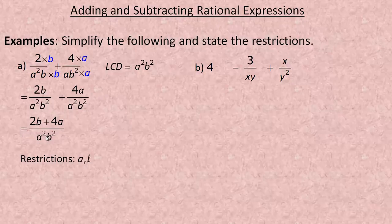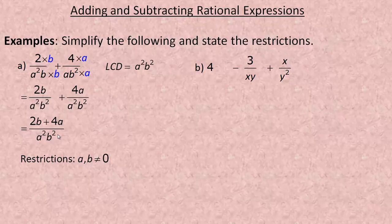For the restrictions: there are a's and b's in the denominators. If a were 0, a squared would be 0 and the expression would be undefined because you can't divide by 0. Similarly, if b were 0, b squared would be 0 no matter what a is. So the restrictions are that both a and b cannot equal 0.